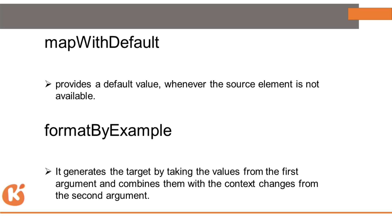Map With Default is used when a field is mandatory for the target system but no value is fetched from the back-end. When you use Map With Default, it provides a default value that you define, so you can pass it to the target system even when the source has no value.